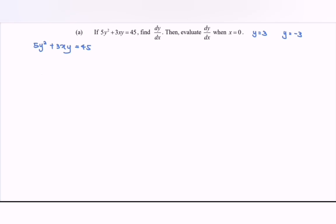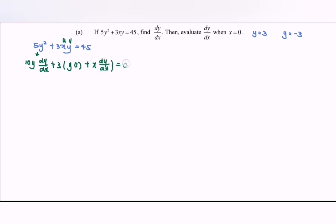Now differentiate the situation with respect to x. If we differentiate this part we will have 10y dy/dx, plus 3 bracket — using the product rule — we have y multiplied with 1 plus x multiplied with dy/dx, equals 0. Rewriting: 10y dy/dx plus 3y plus 3x dy/dx equals 0.